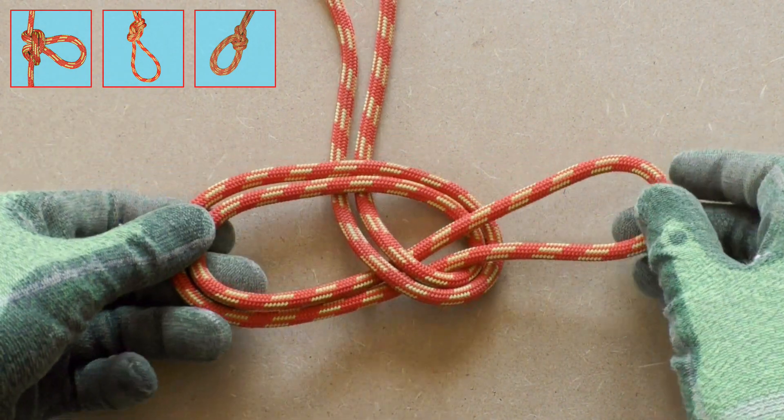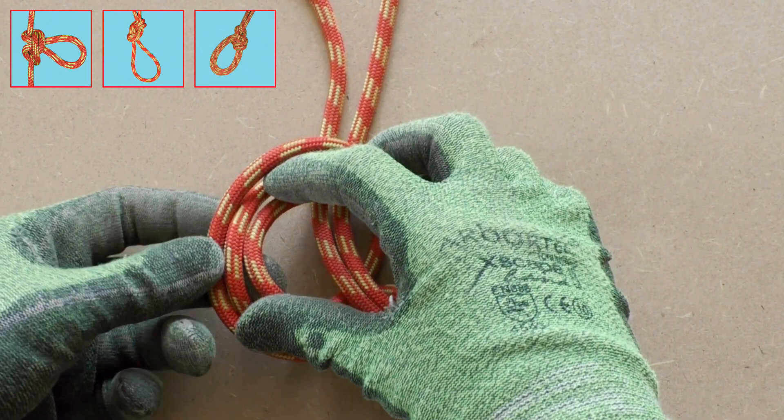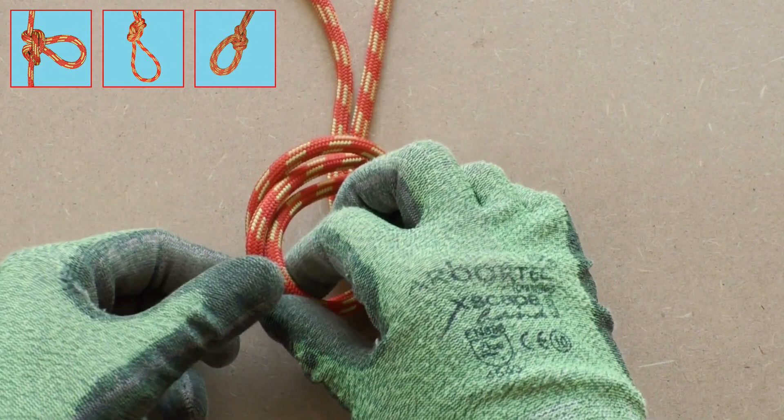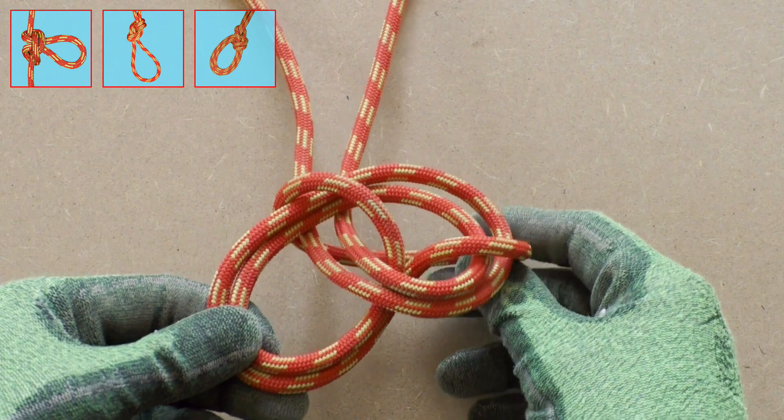So we zoomed in a bit and we will take it slow. The two loops on the left go through the loop. Then the rest of the knot follows.